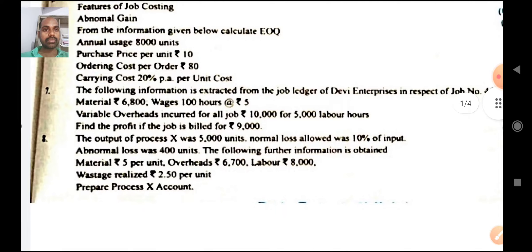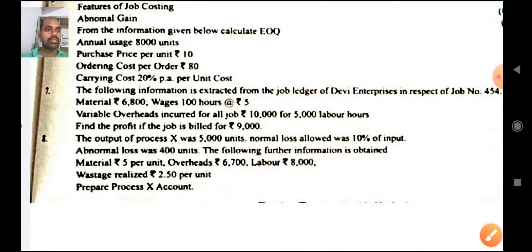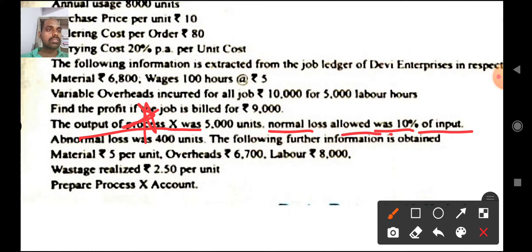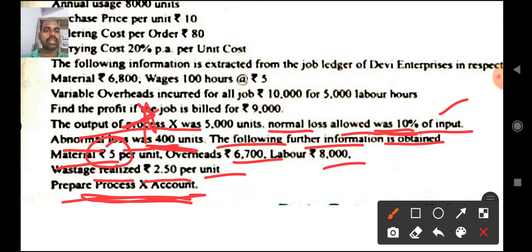Question number 8 is a little tricky one. The output of process X was 5000 units. Normal loss was 10 percent of input. Please remember — this is output and normal loss is 10 percent of input, which we don't know. Abnormal loss was 400 units. Further information: material 5 rupees per unit, overhead 6700 rupees, labor 8000 rupees, wastage realized 2.5 per unit. Prepare process X account.